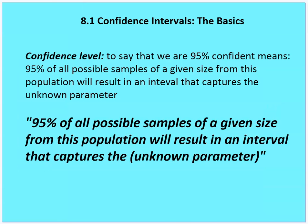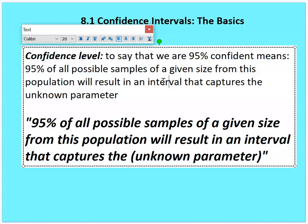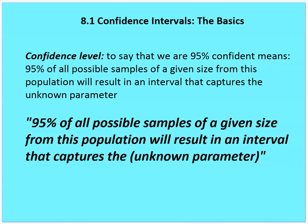Going back to how we discuss confidence levels and confidence intervals: a 95% confidence level means that 95% of all possible samples of a given size from this population will result in an interval that captures the unknown parameter. So we would state: 95% of all possible samples of size 25 from this population will result in an interval that captures the unknown parameter.